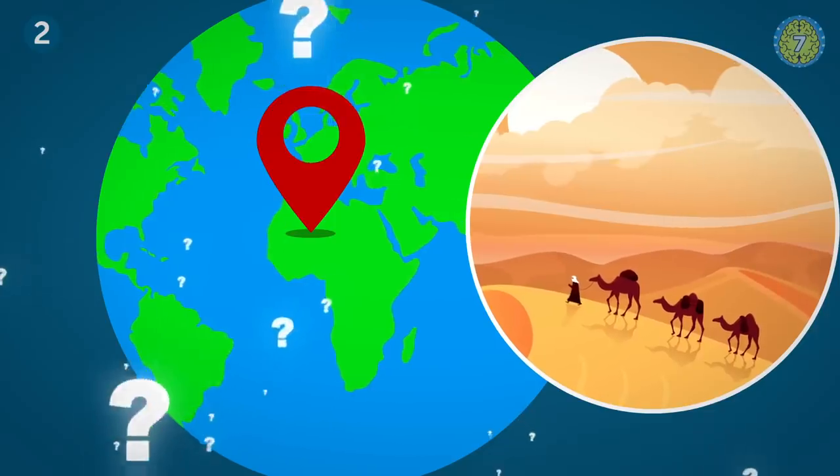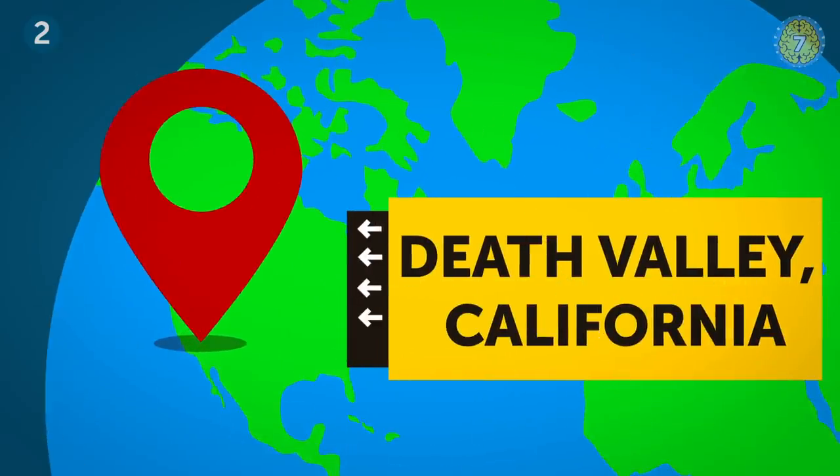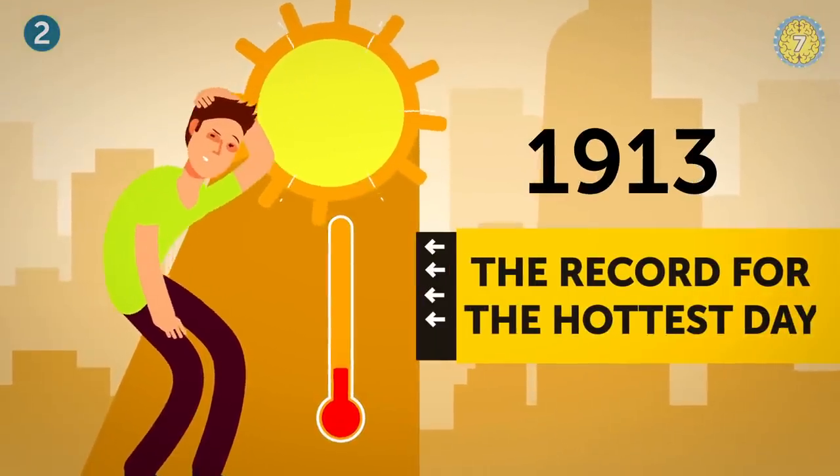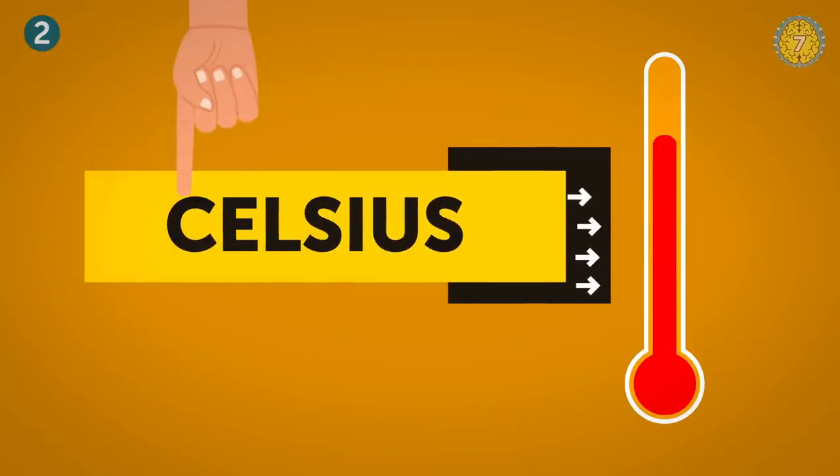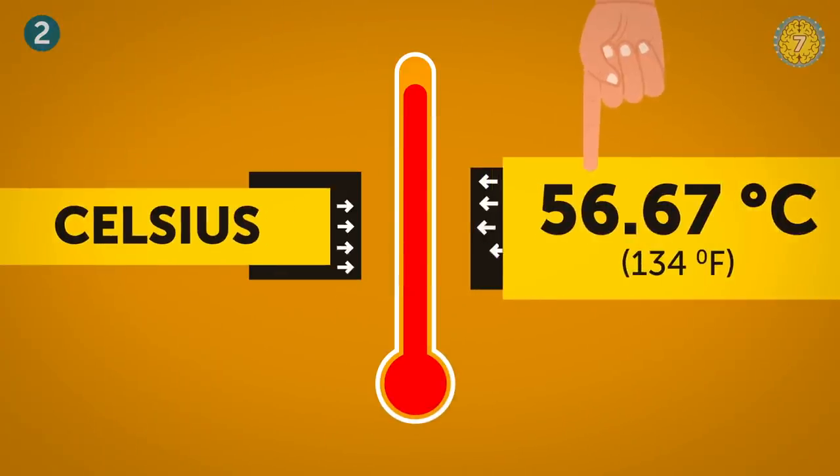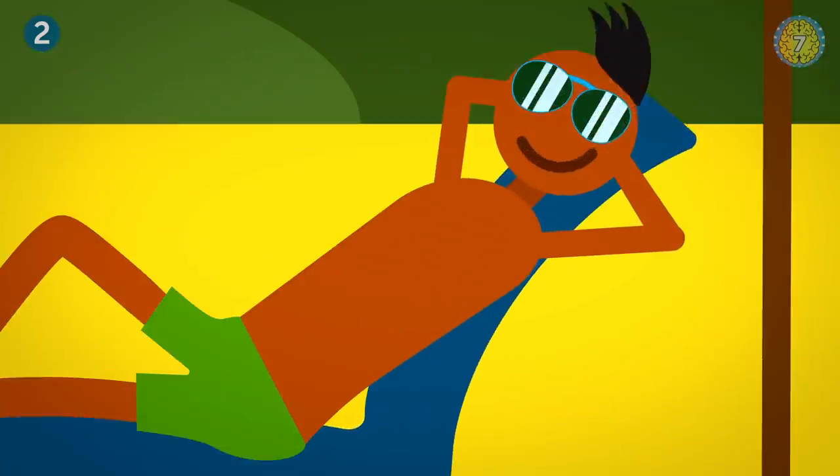And where do you think this happened? Somewhere in the middle of the Sahara Desert? No, actually. It's Death Valley, California. It holds the record for the hottest day on Earth back in 1913. In case you're used to Celsius, that's about 57 degrees. So how about a roasting hot summer holiday? Yeah, no thanks.